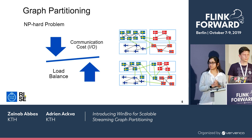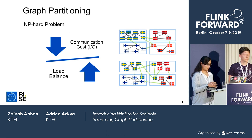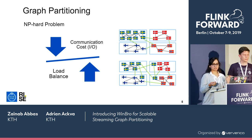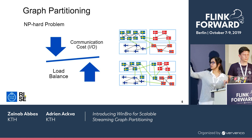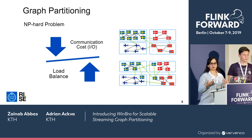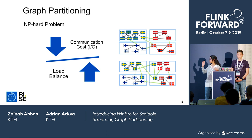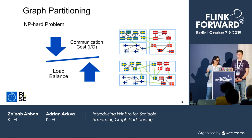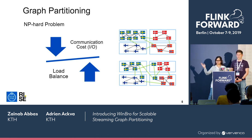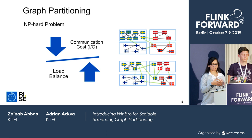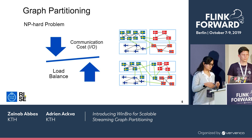Another challenge is that graph partitioning is an NP-hard problem. If we reduce communication cost by putting users of Sweden and Norway together, we end up with imbalanced partitions because one country might have more people than another. So we want load balancing too. But if we move some Swedish people's data to another partition for balance, we get more cuts and increased communication cost. We need a good balance between cuts and load.